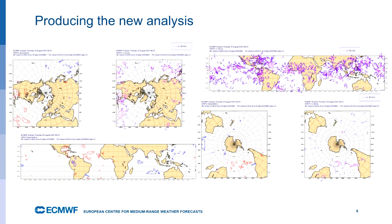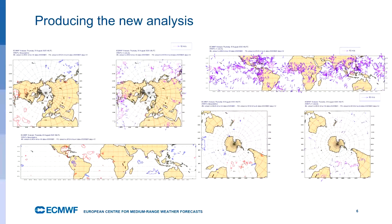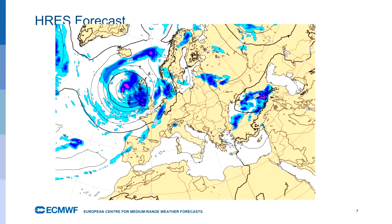This shows how much the previous forecast has changed compared to our current forecast. If you just look at just off Florida and the southern United States, you can see quite large differences there between the observation and the model. This is telling you that the model has changed quite significantly following the assimilation of observations, so that's producing a new analysis.